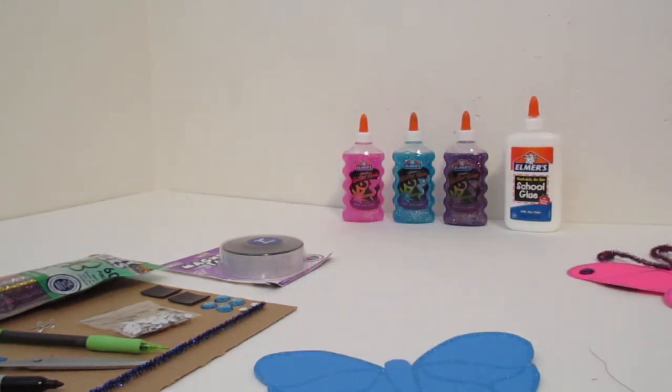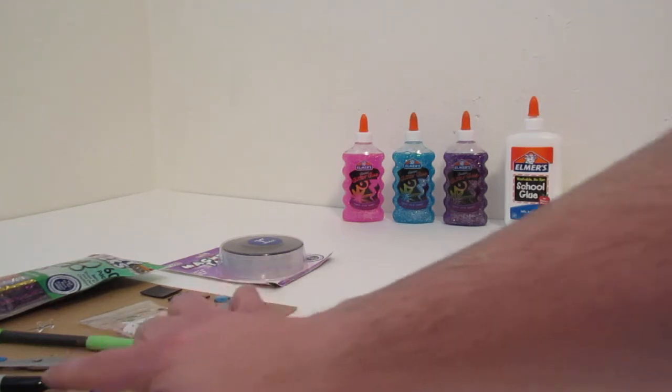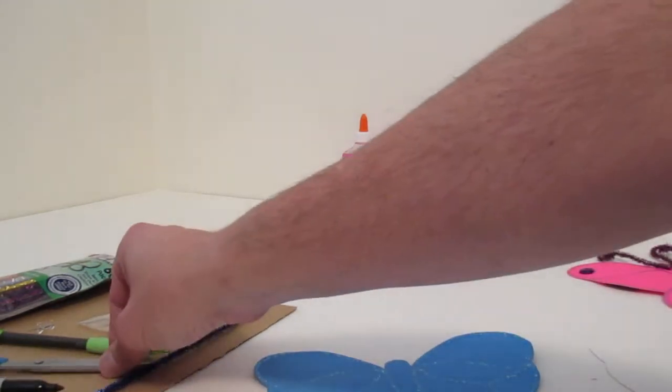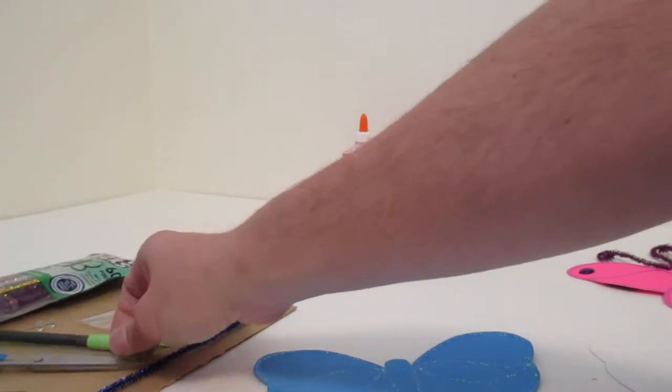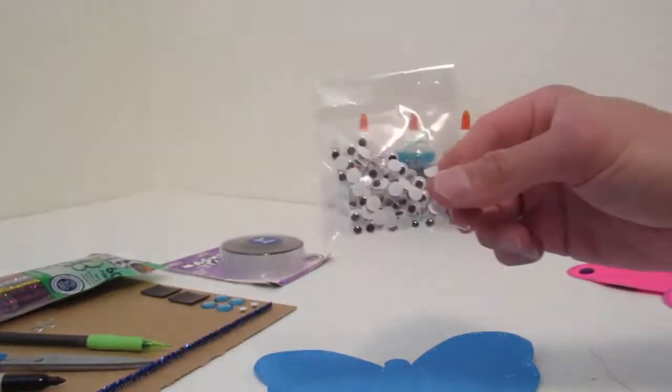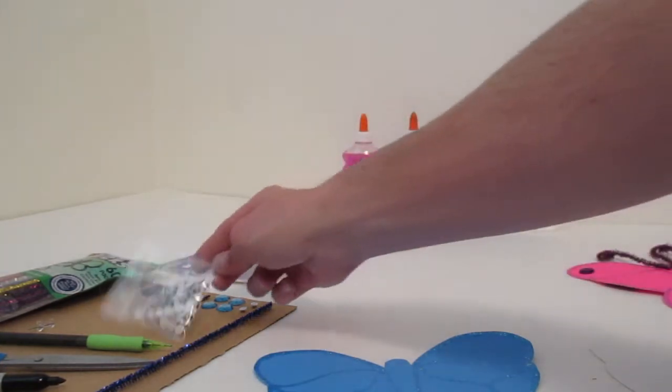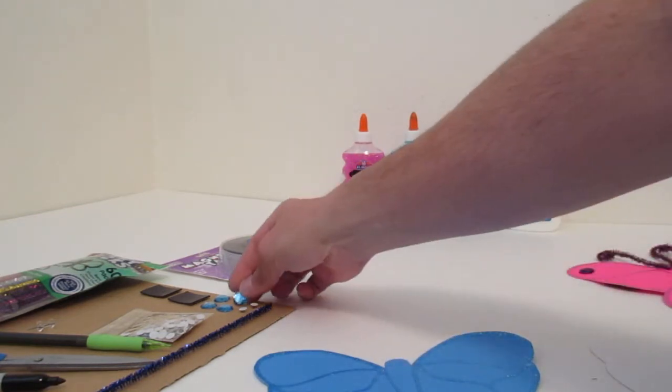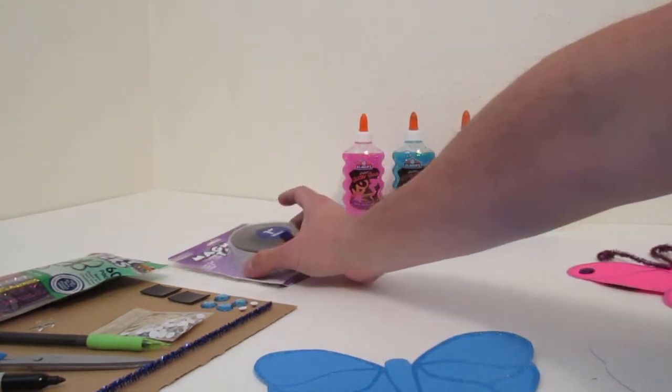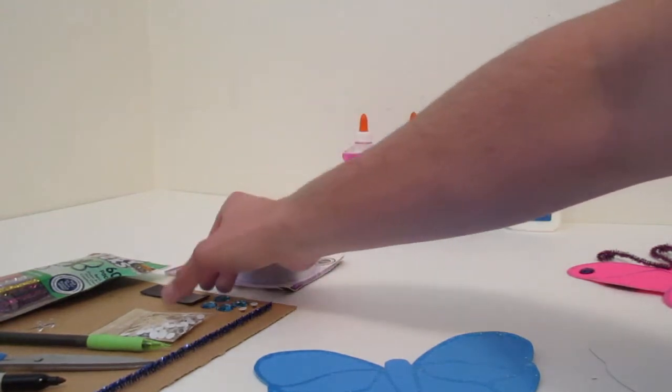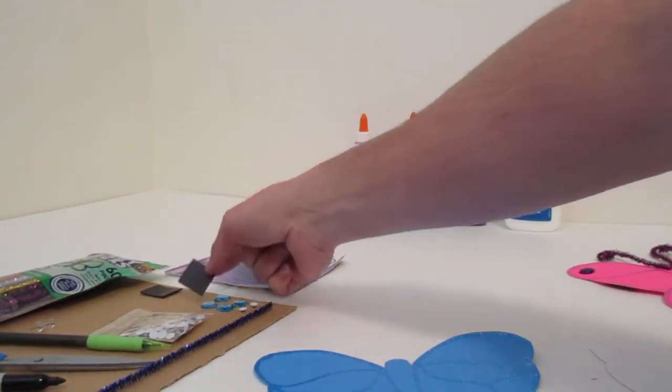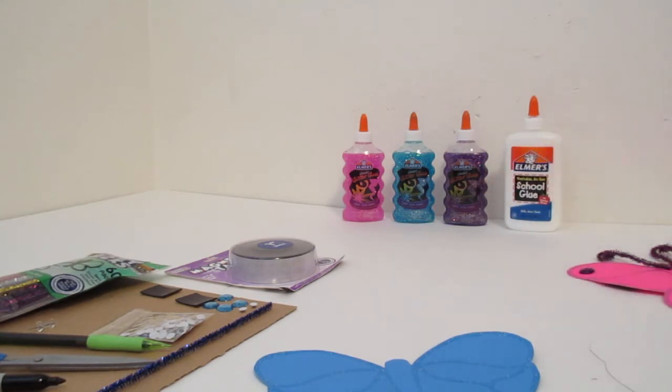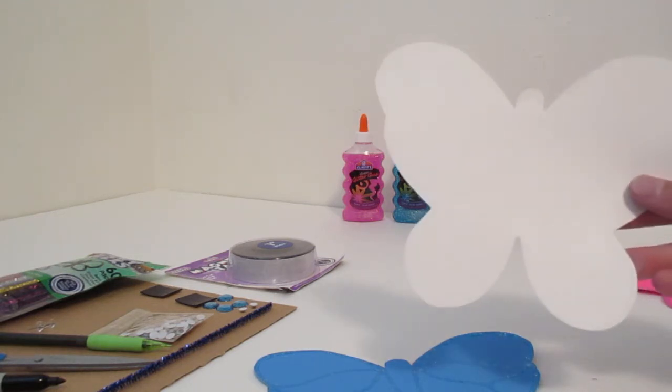The supplies you'll need are one black marker, a pair of scissors, a pencil, some wiggly eyes you only need two, some of these gems that you can sometimes find at the dollar store, this strip magnet that you cut with the scissors to make two little squares, some glitter glue and some normal glue, a colored poster board of whatever color of butterfly you want to make, and a white poster board.